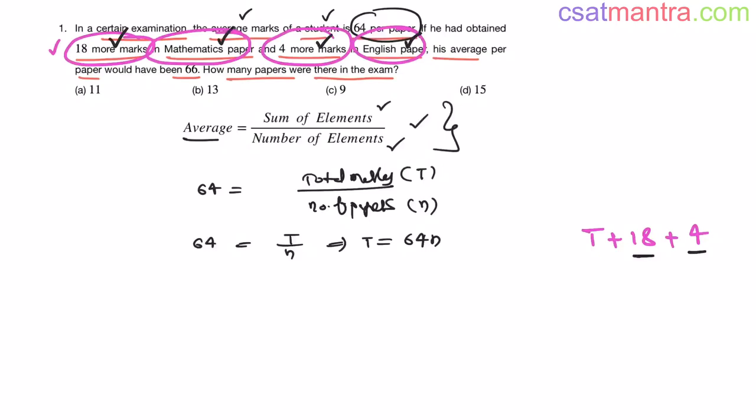Average would have been 66. So average equals total marks by number of papers. Number of papers is going to remain same. It is just that he is getting 18 more marks in mathematics paper and 4 more marks in English paper. Clear right?